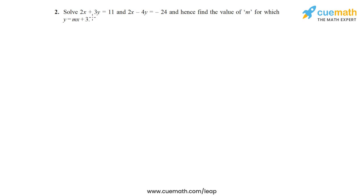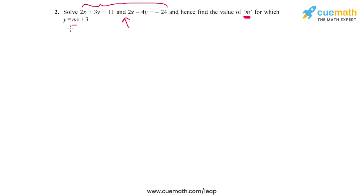In question 2 of this exercise, we have to solve 2x plus 3y equal to 11 and 2x minus 4y equal to minus 24, and hence find the value of m for which y equal to mx plus 3. So we have to find the values of x and y which satisfy both these equations, and then find the value of m for which those values satisfy y equal to mx plus 3.